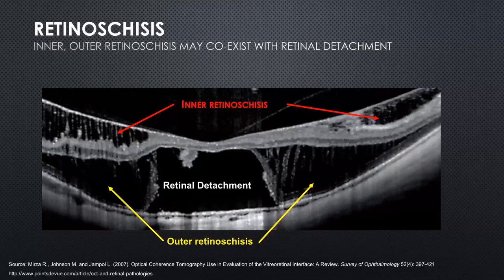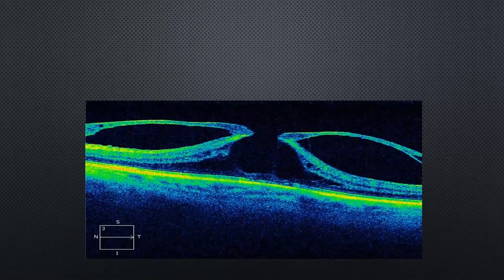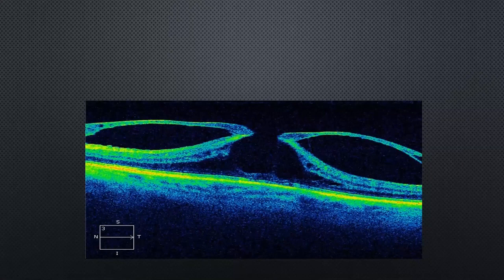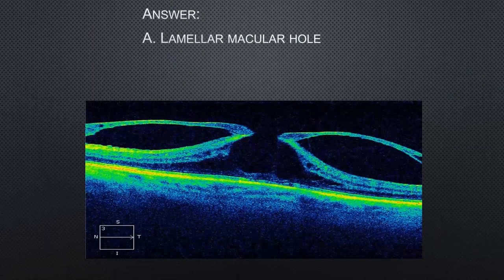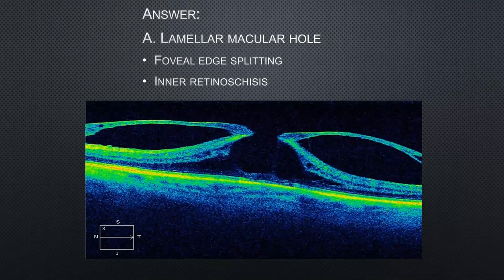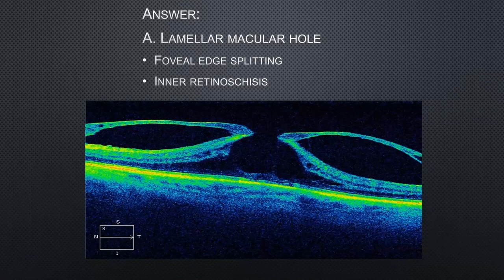Going back to that first picture — yes, that is a schisis. But it's more than just schisis: there is also a lamellar macular hole because of the splitting of the retinal layer. And since it is inner retinal schisis — the outer retina is not involved — the full answer for that picture is inner retinal schisis and lamellar macular hole.